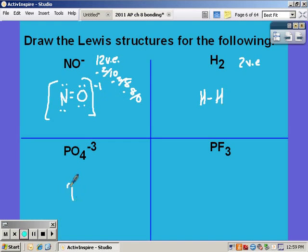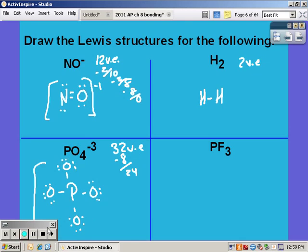For phosphate ion first you need to count up your valence electrons you should have gotten thirty-two and then attach all the oxygens coming off of phosphorus. That was eight electrons that were accounted for. The phosphorus was good but each oxygen needed six so you needed to add three lone pairs or six electrons to each of the oxygens. That was our other twenty-four electrons. Don't forget the brackets and charge.